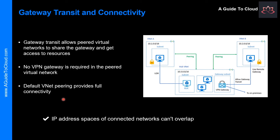Please note that the default VNet Peering configuration provides full connectivity. Network Security Groups can be applied in either Virtual Network to block access to other Virtual Networks or subnets. When configuring Virtual Network Peering, you can either open or close the Network Security Group rules between the Virtual Networks.